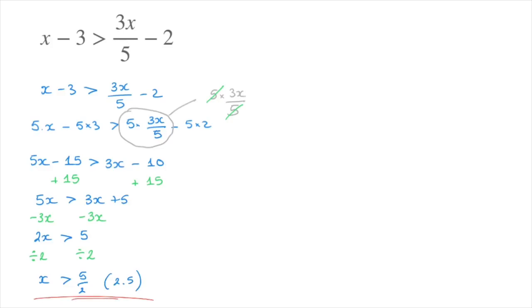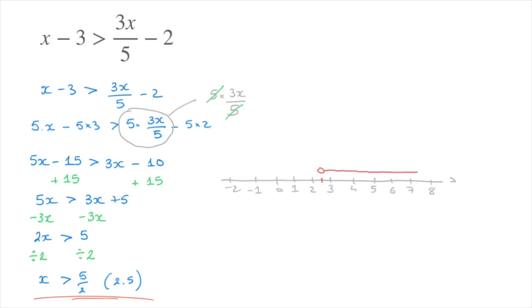If we want to, we can illustrate this answer on a number line. With 0, 1, 2, and so on marked, to illustrate x greater than 5 over 2, which equals 2.5, I place a little dot above 2.5 and from that dot draw an arrow pointing towards all the numbers greater than 2.5. Notice I'm leaving the dot completely empty — that's to highlight the fact that x cannot be equal to 2.5.